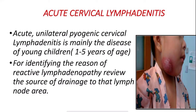We are discussing about acute cervical lymphadenitis. It is an acute, unilateral, pyogenic cervical lymphadenitis. Pyogenic means the infection produces pus. It is mainly the disease of young children from 1 to 5 years of age. So the acute type is: acute, unilateral, pus-containing, pyogenic, found in the age group of 1 to 5 years.